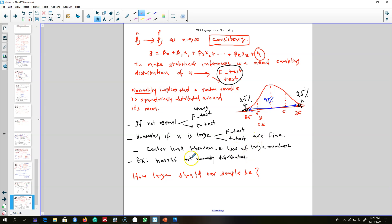Now the question is how large should our sample size be? Some economists think that n equals 30 or above means it's large enough. However, this number is not sufficient for all possible distributions of u.